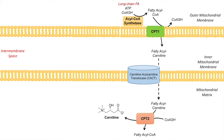Once we have fatty acyl-CoA within the mitochondrial matrix, it can then undergo beta-oxidation of fatty acids. We'll talk about this more in a future lesson on fatty acid metabolism. Beta-oxidation of a fatty acyl-CoA will give us acetyl-CoA as a product.